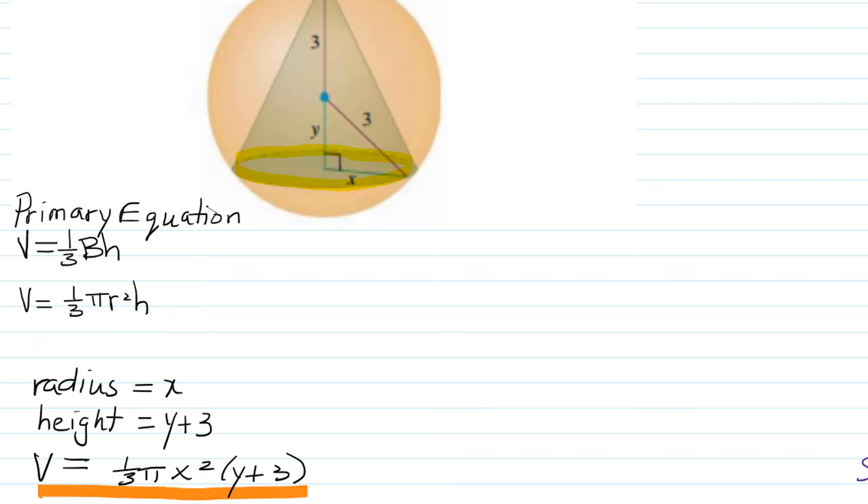But this isn't done yet because we need a function of one variable. We're either going to write this as V(x) or V(y). In either case, we need to write one of the variables in terms of the other. This is where our secondary equation comes in.